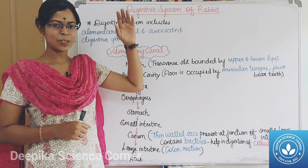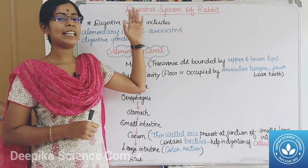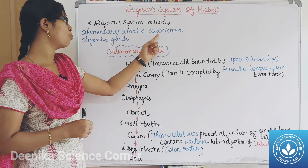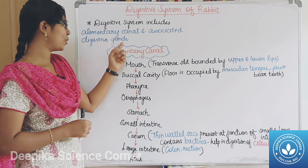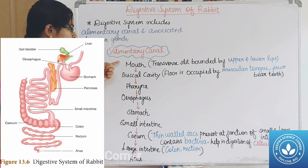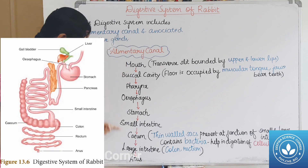Hi everyone. Digestive system of rabbit. It includes the alimentary canal and associated digestive glands. The alimentary canal starts from the mouth and ends at the anus.